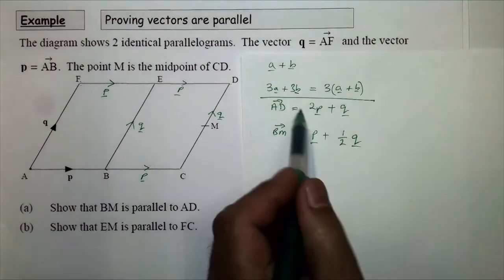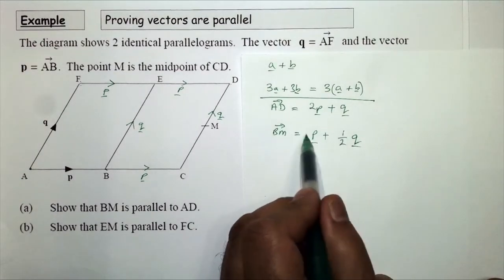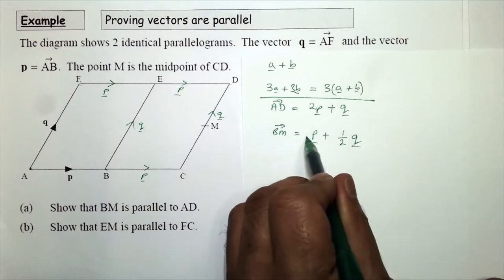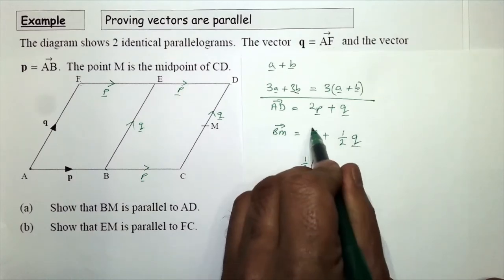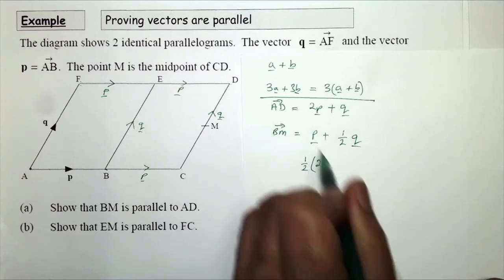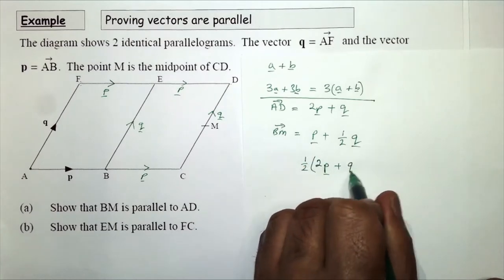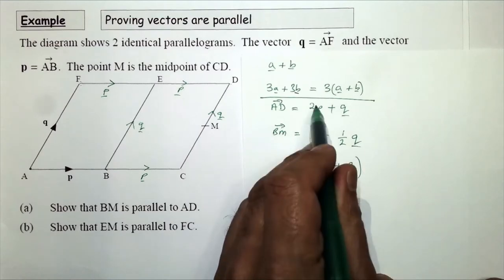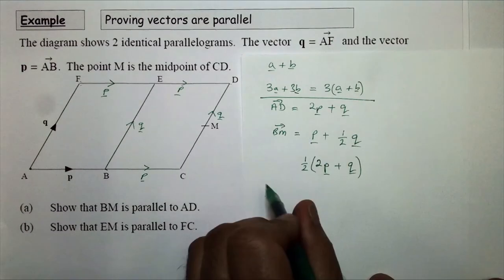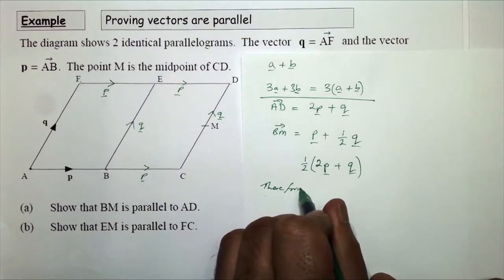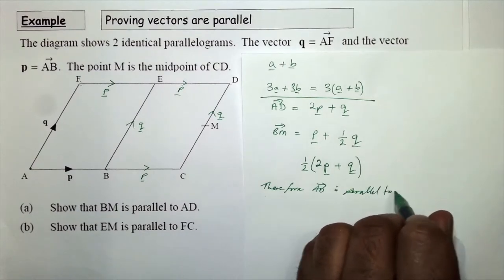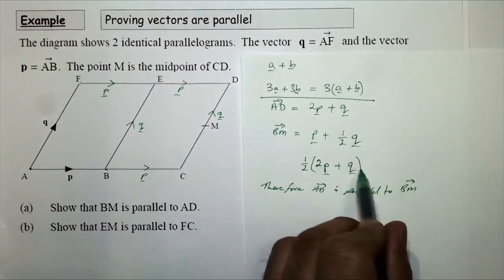To show that these two vectors are parallel, I factorize BM. The common factor between p and half q is a half, so: BM = ½(2p + q). This shows they both contain the vector 2p plus q, and BM is half the length of AD. Therefore AD is parallel to BM because they both contain the vector 2p plus q.